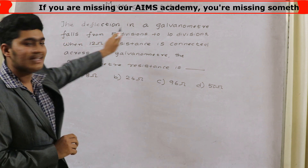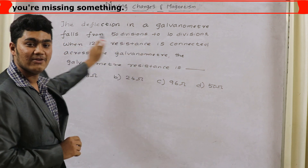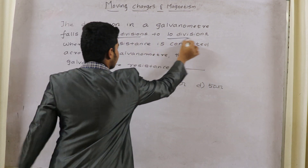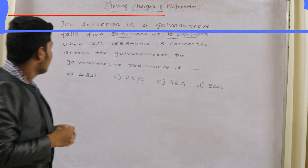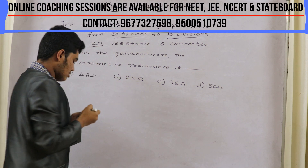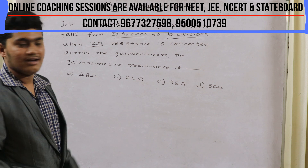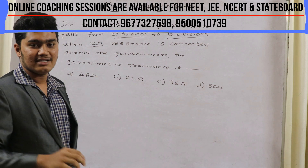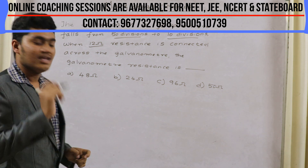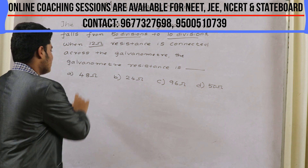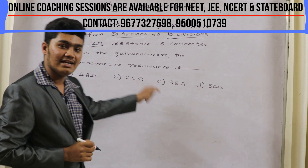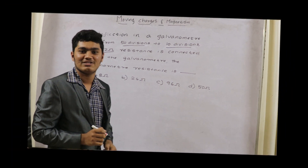The deflection in a galvanometer falls from 50 divisions to 10 divisions, when a 12-ohm resistance is connected across the galvanometer. We need to find the galvanometer resistance. The options are: Option A — 48 ohms, Option B — 24 ohms, Option C — 96 ohms, Option D — 50 ohms.